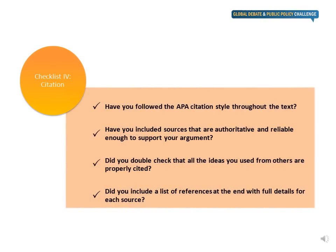In addition to analysis, recommendations and structure, citation is the last criterion your paper will be judged on. Make sure that you use credible evidence to support your arguments and cite the sources used properly. Have you followed the APA citation style throughout the text? You can find more on this specific style on our website under writing guidelines. Have you included sources that are authoritative and reliable enough to support your arguments? Did you double-check that all the ideas you used from others are properly cited? And did you include a list of references at the end with full details for each source?